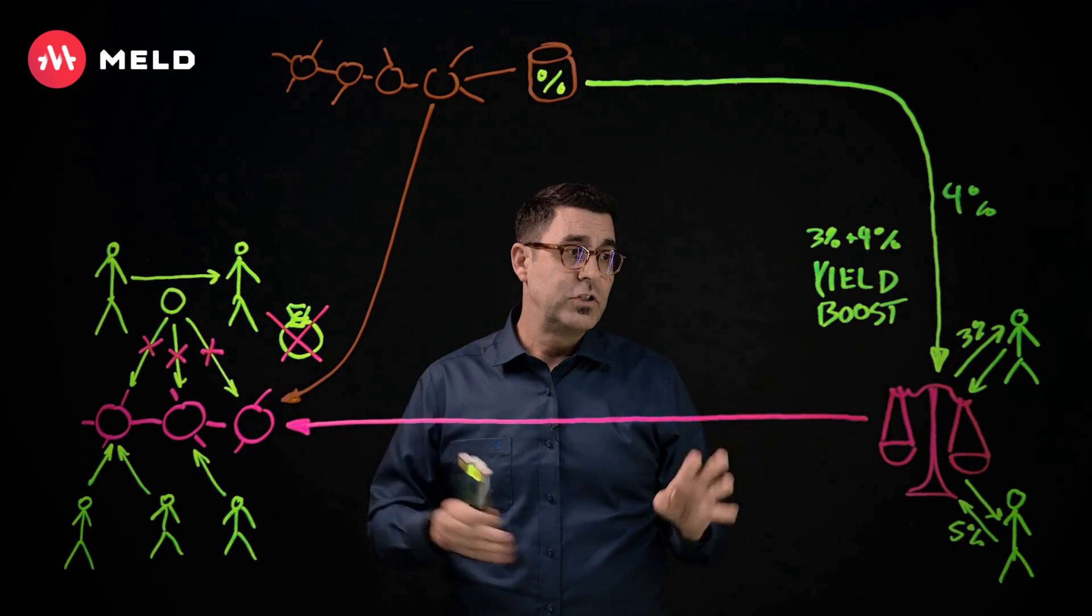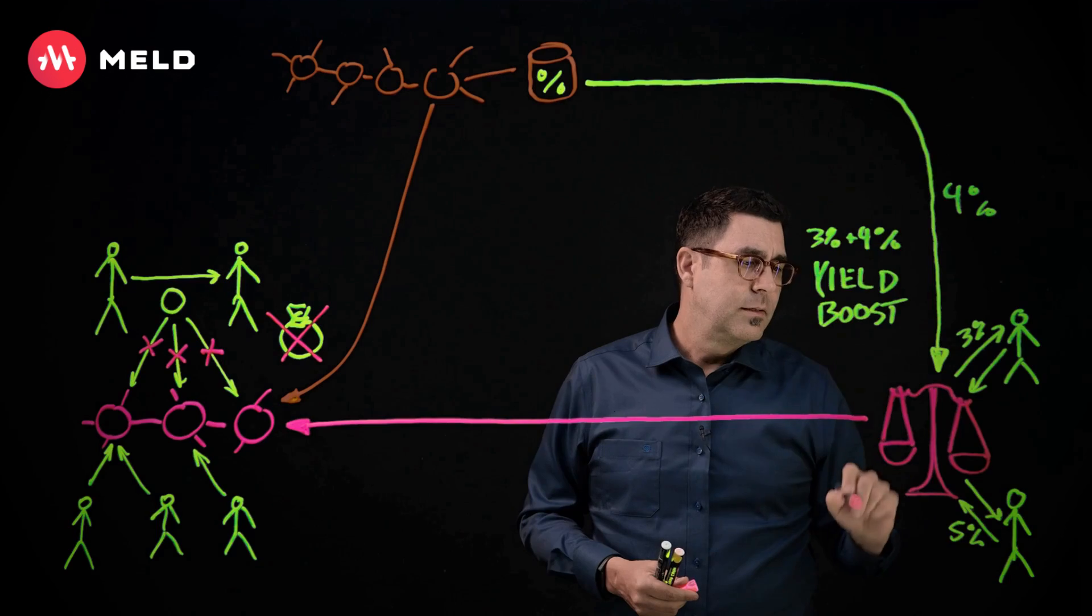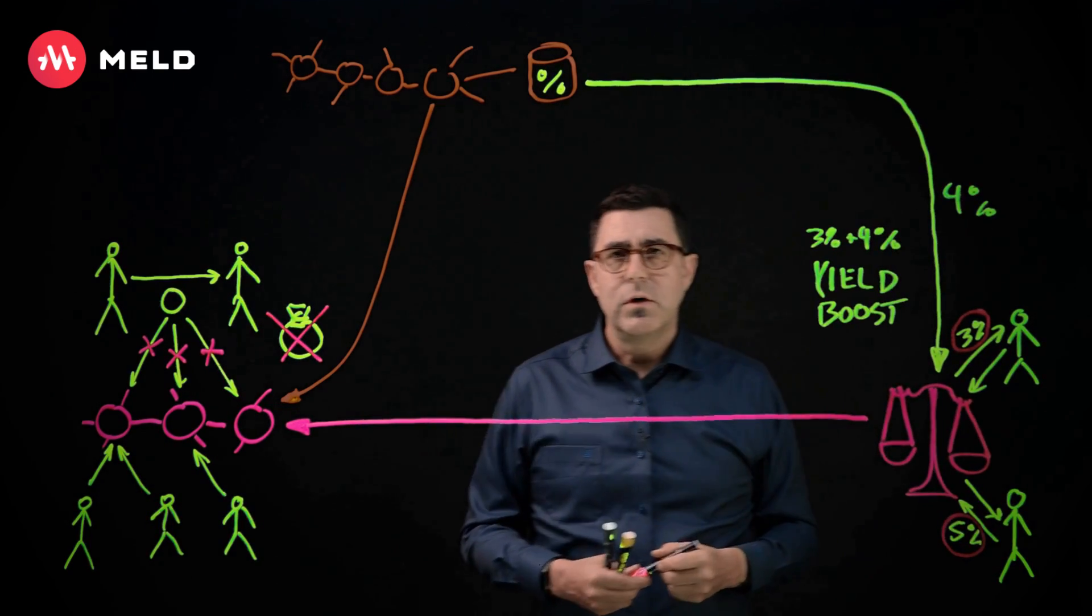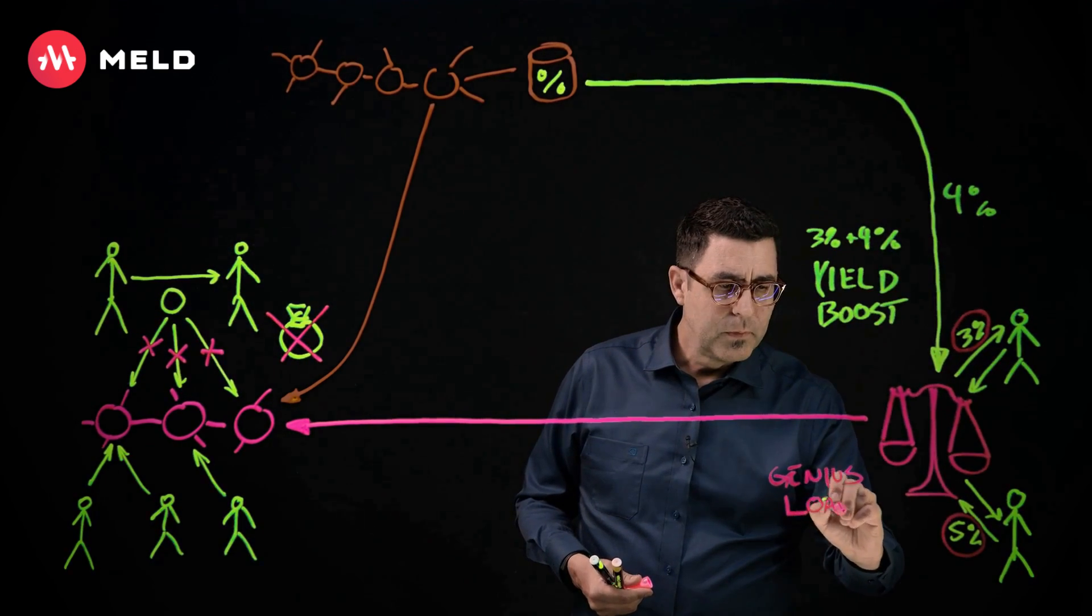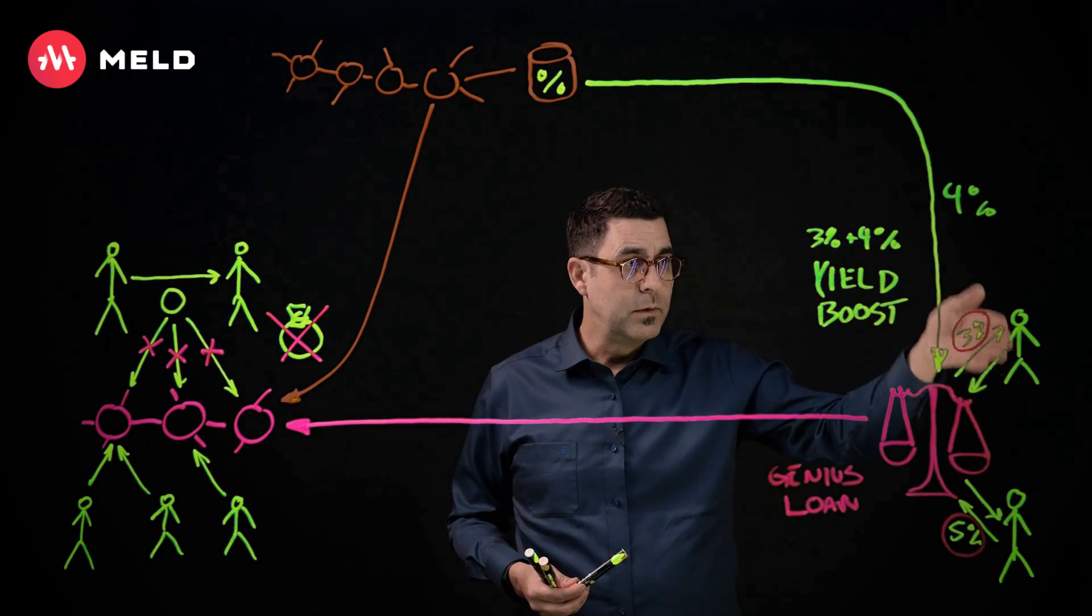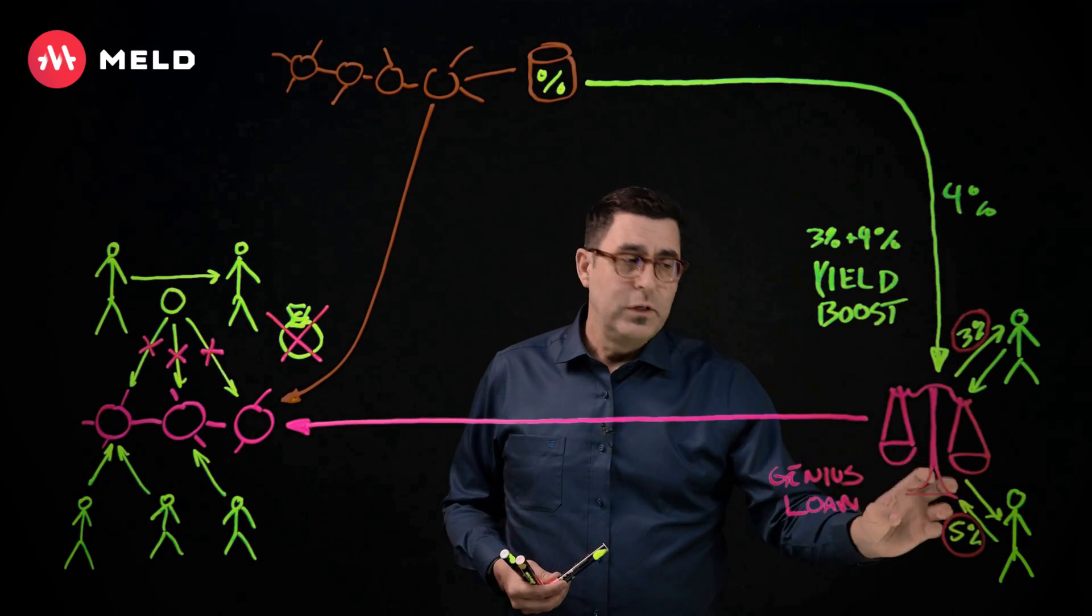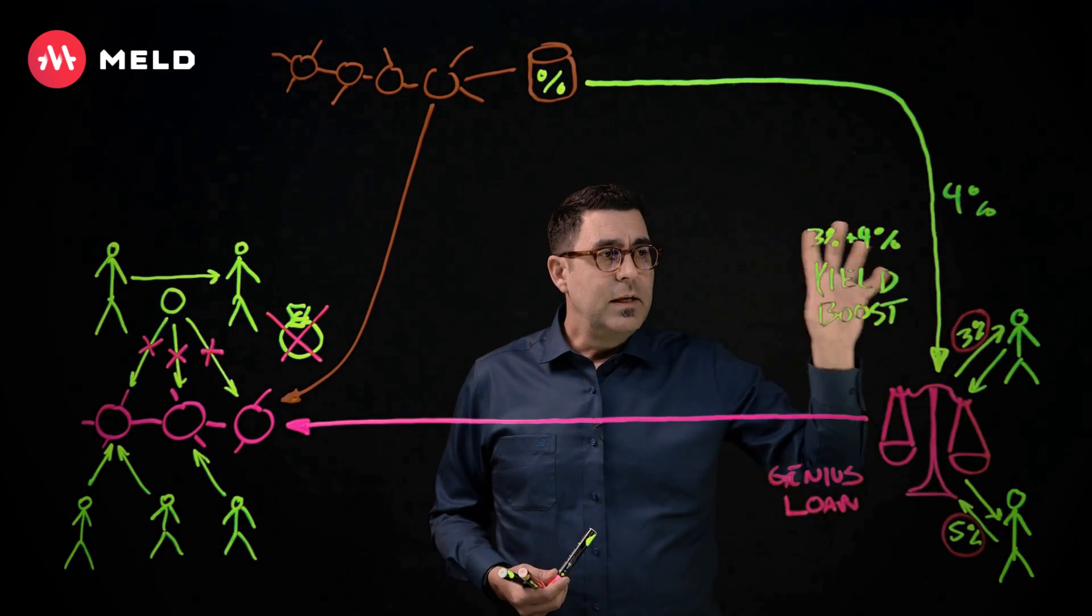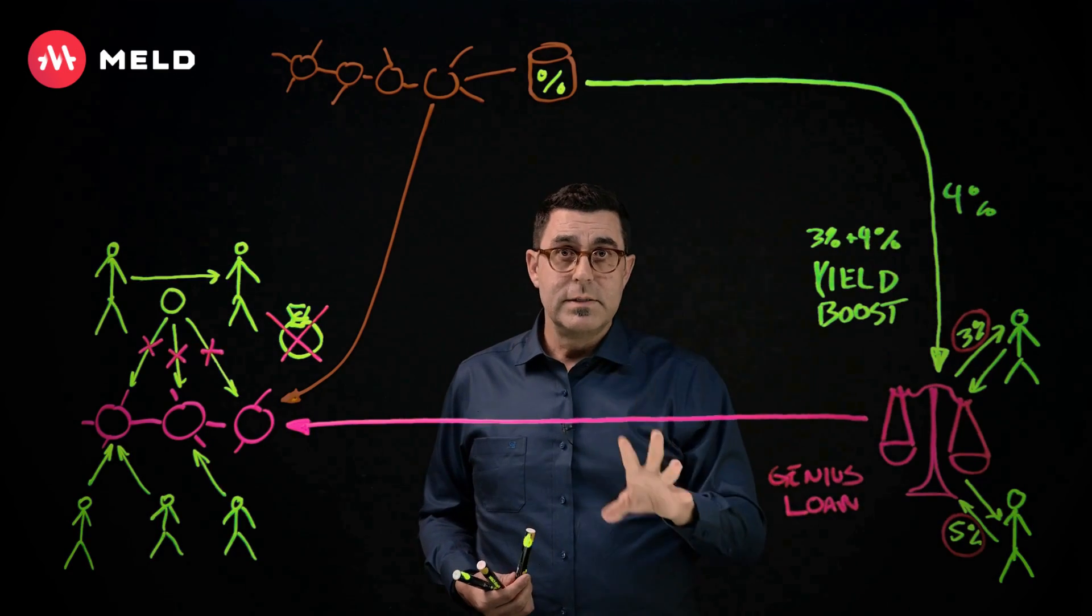So these are some of the key characteristics that we have in the MELD blockchain that are built into the layer one, that are built into the core part of the chain. So one of the other key characteristics we have is the ability to supply an asset and then borrow. But when you supply it and then you do the borrow, you can take out what's called a genius loan. And that genius loan means that the interest that you generate based on what you've supplied, this 3 plus 4, will go to pay down the interest, the yield you've made, will go to pay down the interest on the loan that you've taken out. So it's a self-paying loan. And because we have yield boost, in a lot of cases, the yield you're going to generate is going to be much higher than the interest you're going to pay. So you will be net interest positive in this situation.